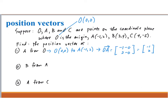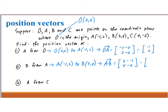The second one is the position vector of B from A. We go from A with coordinates (-1, 2) to B with coordinates (3, 4). The vector we are looking for is AB. The X component is 3 minus (-1), and the Y component is 4 minus 2. That gives (4, 2).